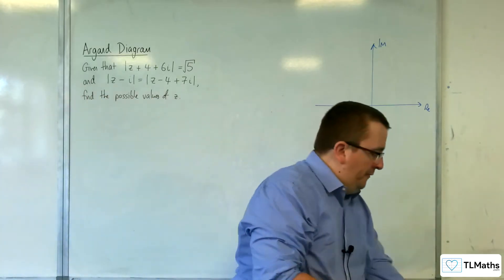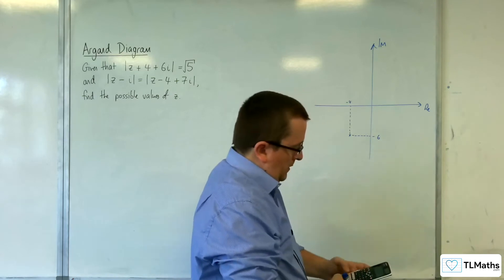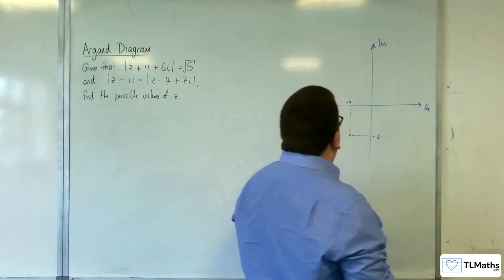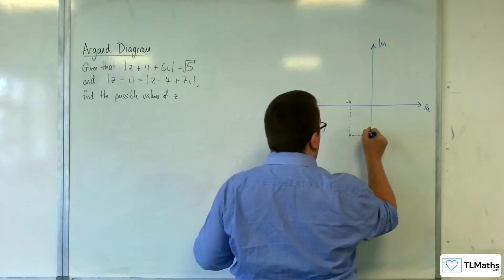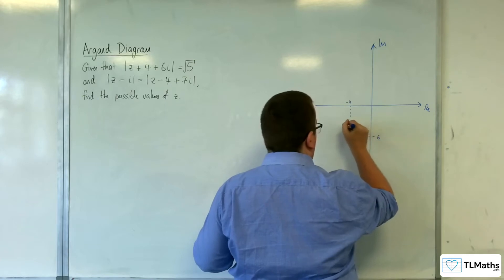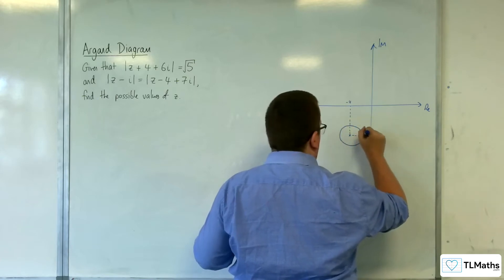Now, root 5 is 2.236, so it's not going to touch an axis. It's going to look something like that.